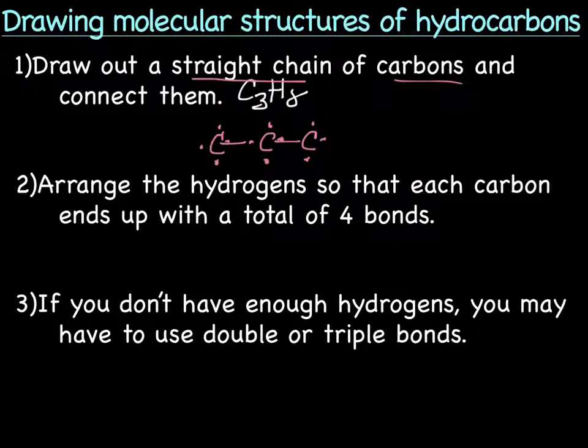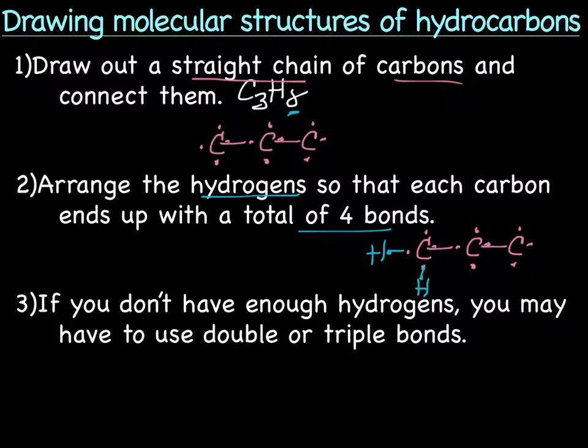Next step, we're going to arrange the hydrogens so that each carbon ends up with a total of four bonds. So we have a total of eight hydrogens. And let's look, we have one, two, three, four, five, six, seven, eight bonding spots. So we can put a hydrogen, which each has one valence electron, at each bonding spot. There you go.